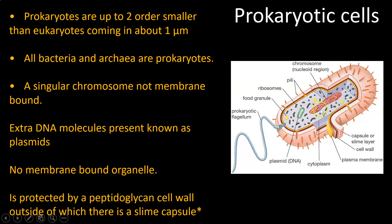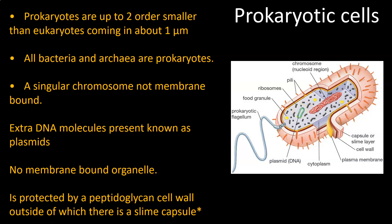Other than DNA residing on the chromosome, we also have extrachromosomal DNA — DNA independent of the actual main chromosome — and these are called plasmids. So extra DNA present in prokaryotes is known as plasmids, and these are important, as you'll later find out when it comes to antibiotic resistance.